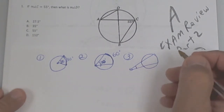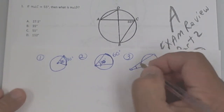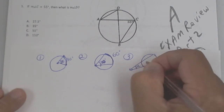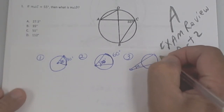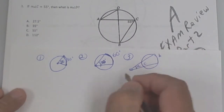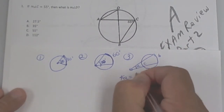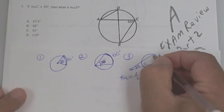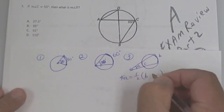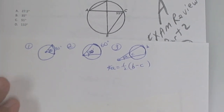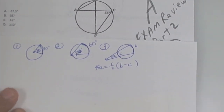Number three: the vertex is outside the circle. The angle is equal to half of the difference — angle A is equal to half of the difference of B minus C. So angle A equals half of the big arc B minus the little arc C, and there's the formula.